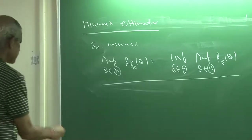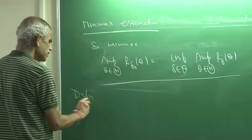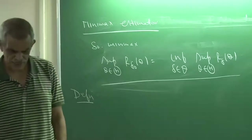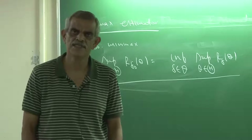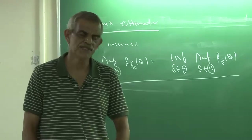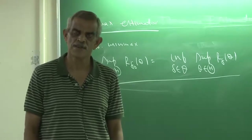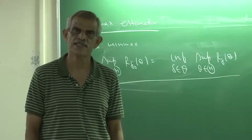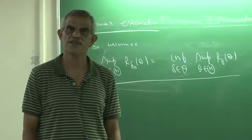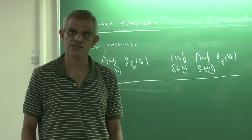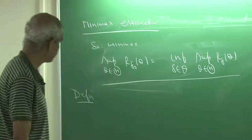Now let me first define what we mean by a unique Minimax estimator. That definition is exactly the same way we define the unique Bayes estimator. That means, if there is any other Minimax estimator apart from delta naught, then that estimator would be the same as delta naught with probability 1, with respect to the distribution of x given theta, for every theta.